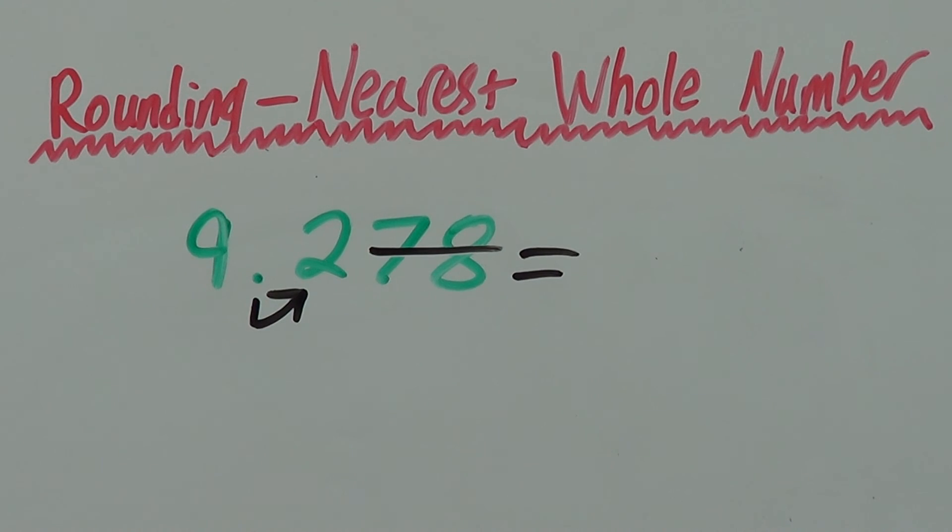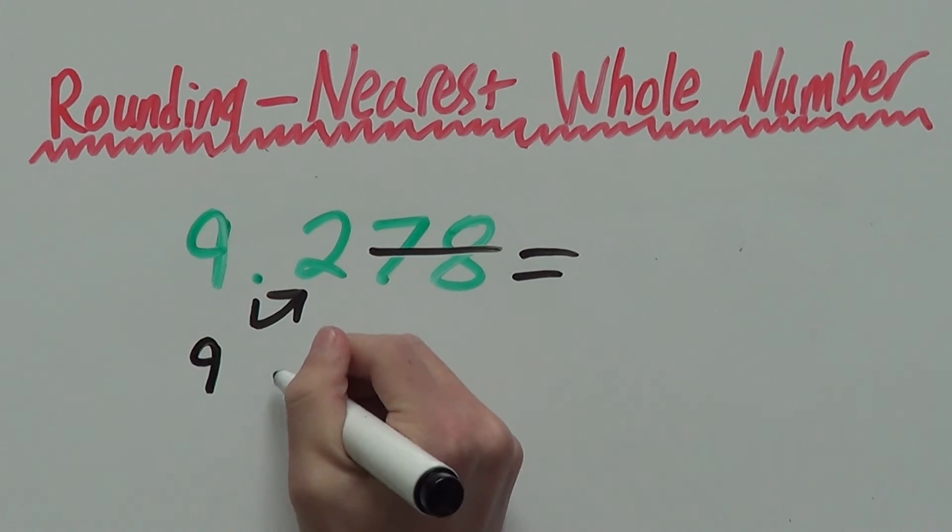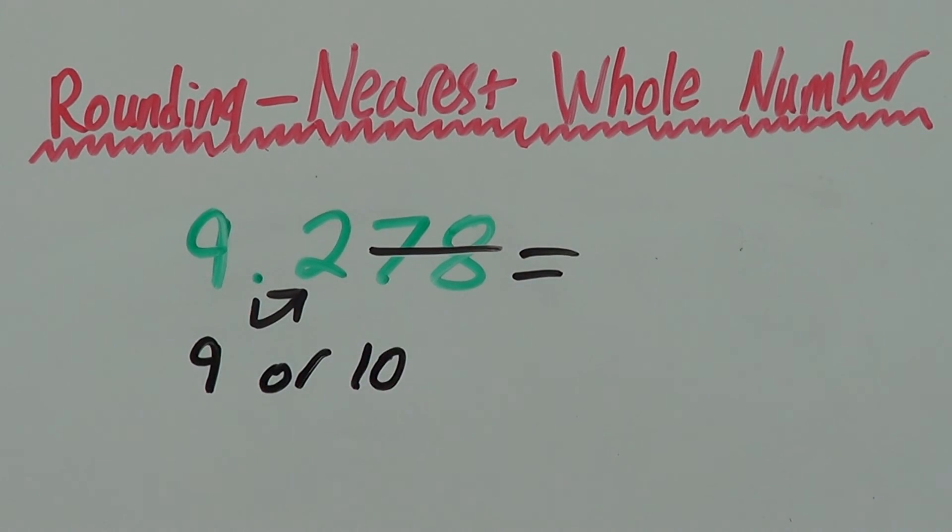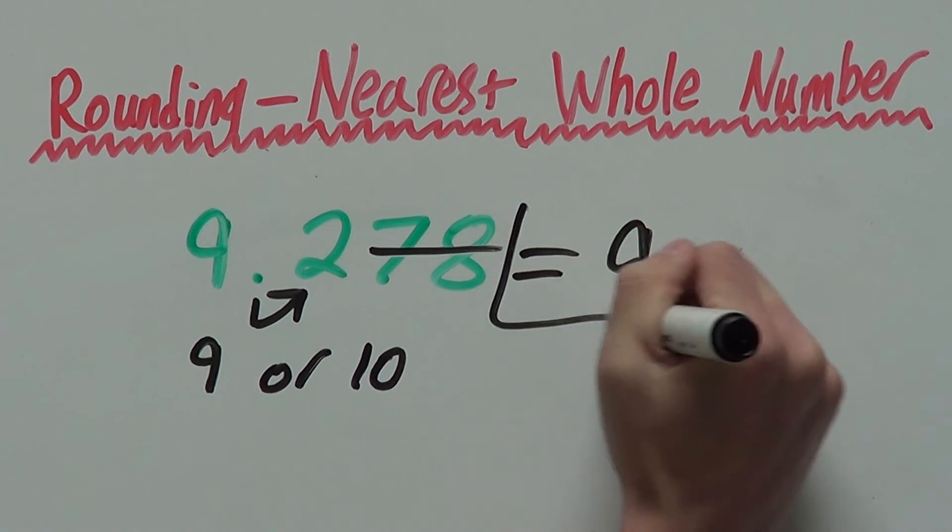Just look at 9.2. Does that go to 9 or 10? Point 2, 9.2 is closer to 9 than 10. So, we round it down to 9. We can see this as the number right behind the decimal, which is 2, is less than 5. So, we round down to 9.